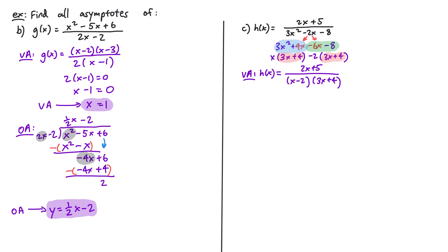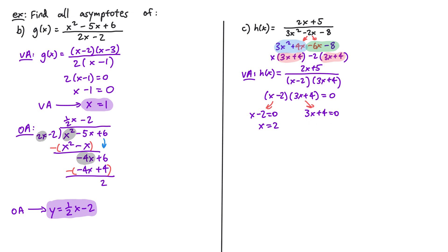There are no common factors between the numerator and denominator, so nothing to cancel. We set x minus 2 times 3x plus 4 equal to zero. Using the zero product property: x minus 2 equals 0 gives x equals 2, and 3x plus 4 equals 0 gives 3x equals negative 4, so x equals negative 4 over 3. These are our two vertical asymptotes.